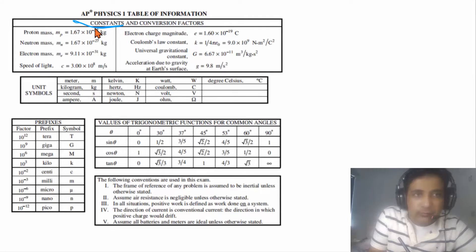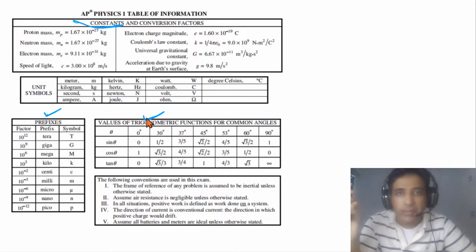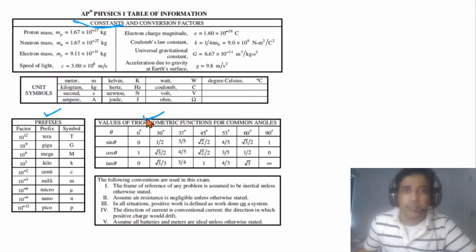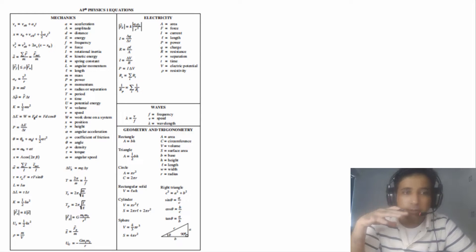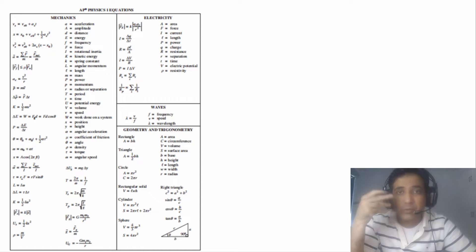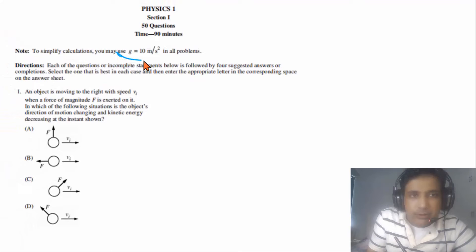On the second page of the exam paper you can find important data: values of constants, prefixes, and trig functions. The next page gives important formulae. Try to remember these, but if you've forgotten any formula you can check this page during the exam. For this exam we use g equal to 10 meters per second squared.